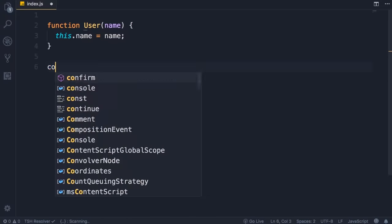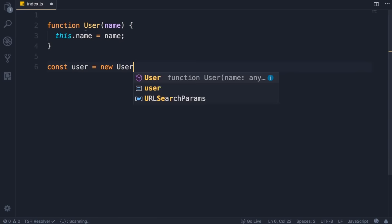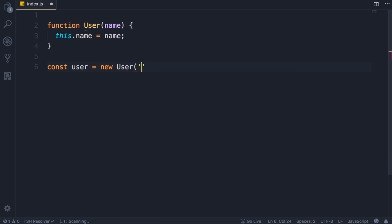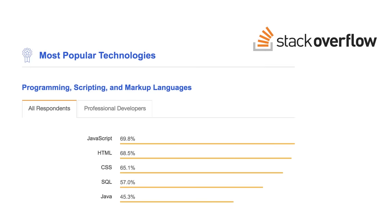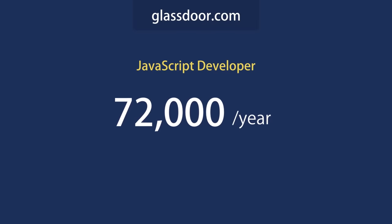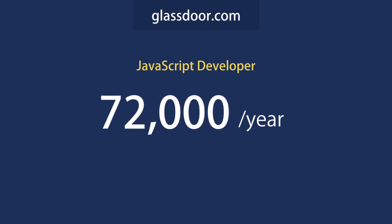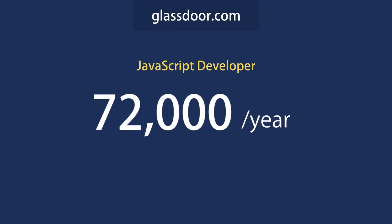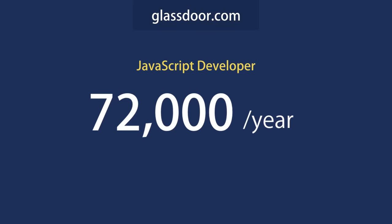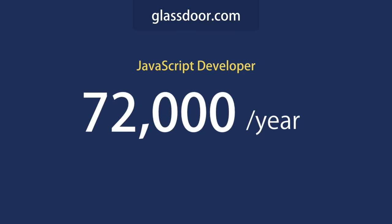What is JavaScript? JavaScript is one of the most popular and widely used programming languages in the world right now. It's growing faster than any other programming language, and big companies like Netflix, Walmart, and PayPal build internal applications around JavaScript. The average salary of a JavaScript developer in the United States is $72,000 a year, so it's a great opportunity to get a good job.